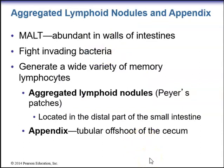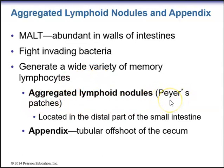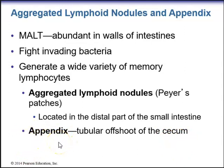We also have aggregated lymphoid nodules and the appendix. The mucosa-associated lymphoid tissue is abundant in the walls of the intestines and helps fight invading bacteria and generates a wide variety of memory lymphocytes. Aggregated lymphoid nodules called Peyer's patches are very predominant in the distal part of the small intestine. The appendix is a tubular offshoot of the cecum, the first part of the large intestine. When it becomes inflamed — appendicitis — it must be removed by appendectomy before it ruptures, as perforation becomes quite dangerous.